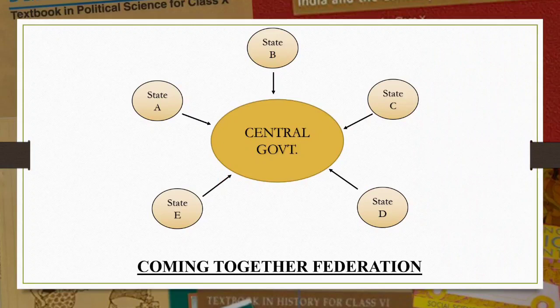This way, on one hand they do not lose their sovereignty, and on the other hand they maintain their identity. In addition, when they get united they become more powerful than before — unity is strength. This is what happened in the case of America. The 13 American colonies declared independence from Great Britain in 1776, then came together to form the United States of America. You can see the slide: there is a central government with states A, B, C, D, E coming together to form a federation.